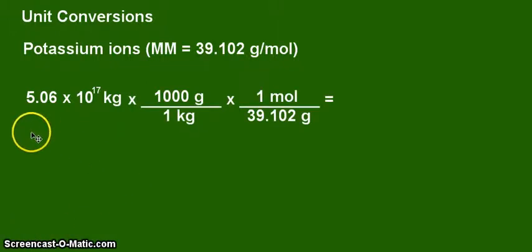So we have here the outline of our solution, starting with the mass 5.06 times 10 to the 17 kilograms. Again, this was previously calculated, so it is a given in this problem. And one conversion factor, that is 1 kilogram equals 1,000 grams.